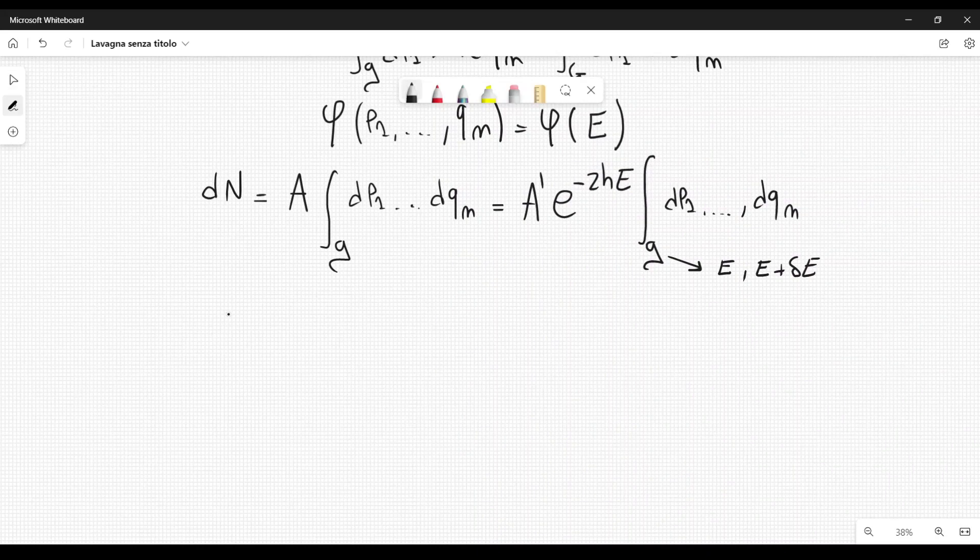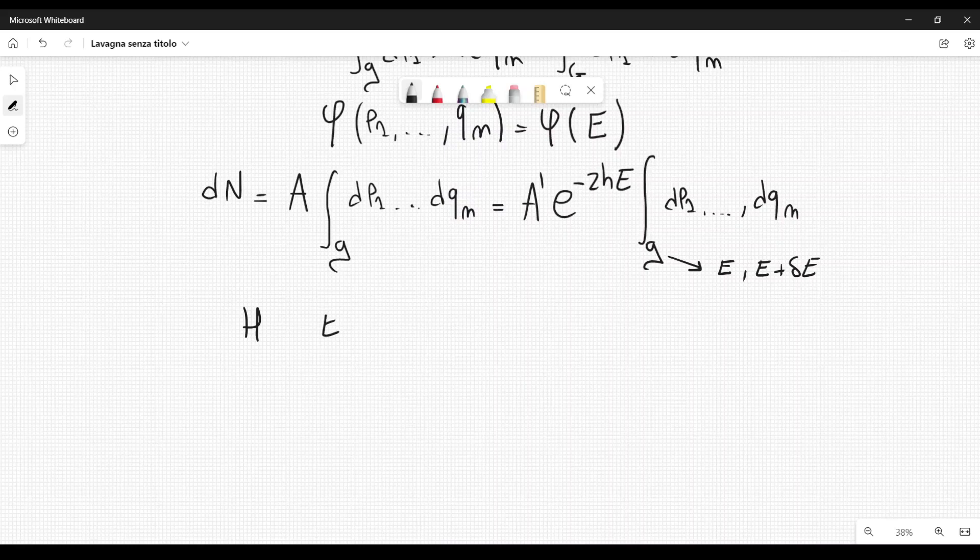One system has energy H, another system has energy E bar. The total energy of the two systems is given by the sum of these two single systems. And Einstein considered H to be much greater than E bar. The number dN for the overall system, which comprises the two systems, where the first system has energy H and the second one has energy E bar.